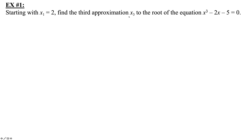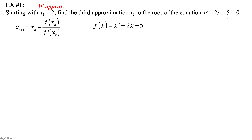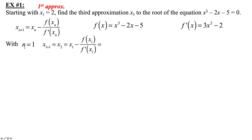Example: Starting with x sub 1 equal to 2, find the third approximation x sub 3 to the root of x cubed minus 2x minus 5 equals 0. We just need to compute x sub 2 and x sub 3. Our f(x) is x cubed minus 2x minus 5, and f'(x) is 3x squared minus 2. With n equal to 1, x sub 2 is the second approximation.